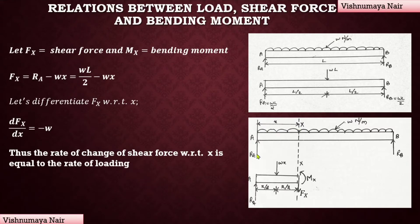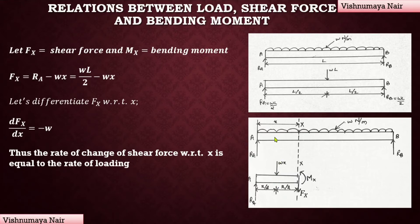On the left portion of the section, we have a reaction force and a UDL spread over a distance of X meters. We have to convert this UDL into a point load whose value equals the rate of loading times the length of the UDL. Here the length of the UDL is X meters, so the equivalent point load equals W into X, acting at the centre of the UDL, which is at a distance of X/2 from both end A and the section.